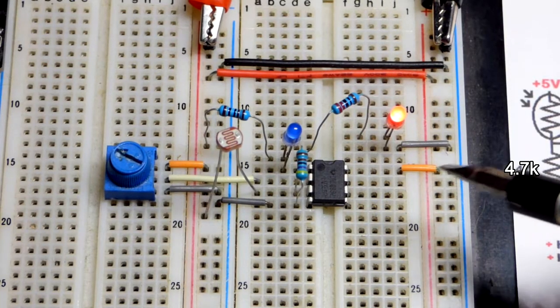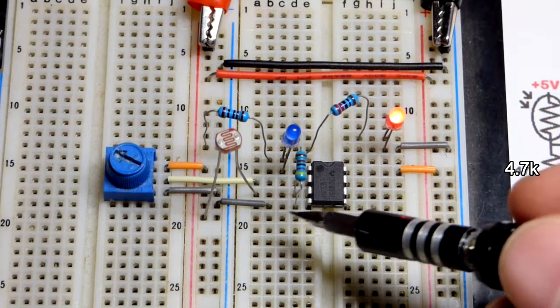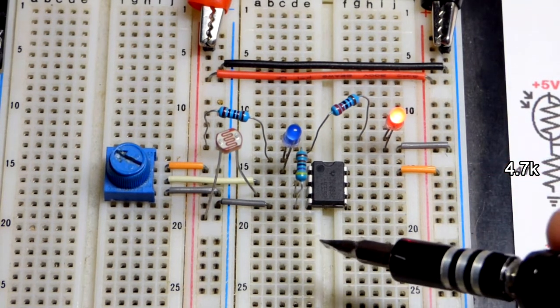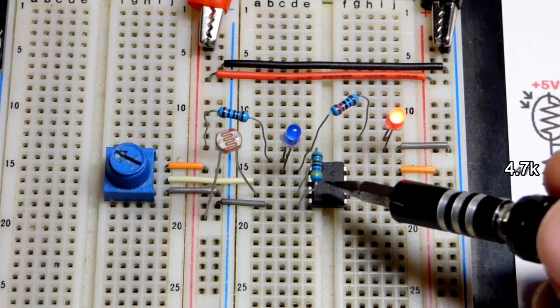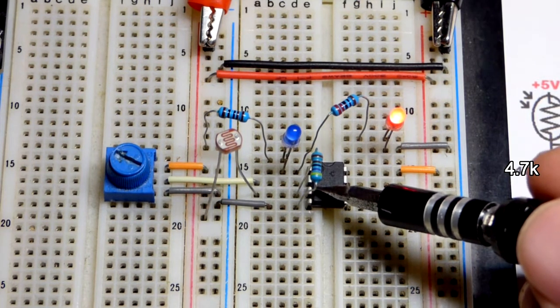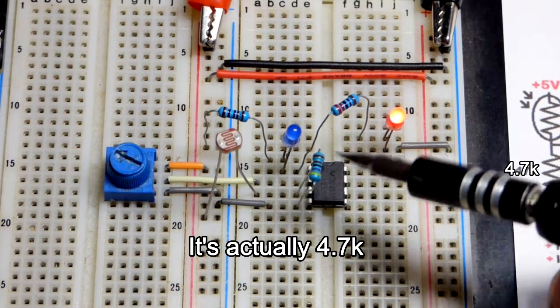And here we got the physical circuit. So we got the positive supply to pin 8 and then negative supply to pin 4 right there. Those are supply pins. And then our non inverting as we said before is the lower one. That's the plus. So there is our 47 kilo ohms. You can see the yellow for 4.